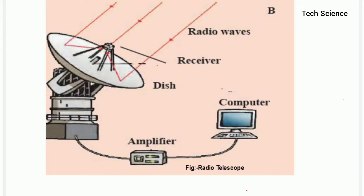Hello guys, you are with Tech Science. Today we are discussing a new point. Since a couple of days we are discussing the chapter 'Observing Space' — different types of telescopes that we already discussed, like optical telescopes. In the reflecting type telescope we have Newtonian as well as the Cassegrain telescope. So here we observe three different types of telescopes: first, optical telescope in which lenses are used; second, Newtonian telescope in which mirrors are used; and third, Cassegrain, where mirrors are used.